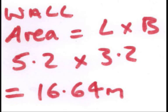The area of the wall of a rectangle is the length times the breadth, 5.2 times 3.2, which gives us 16.64 metres squared.